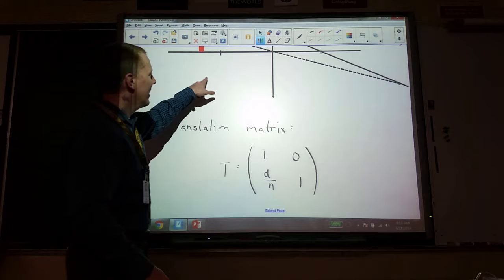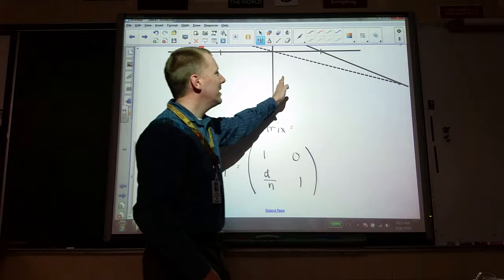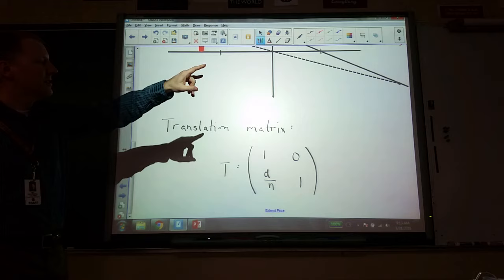This matrix will always have the same form. So I'll label it with a T. And it is 1, 0, 1, and then the only thing that's not 1 or 0 is down here. And this is the distance divided by the index of refraction of that material. And this would go for anything. So our first section where we're going through air, that would be a translation matrix. The lens is different. But then after the lens, we translate again, again through air. So the first and the third would actually look both quite similar because they're both going through air.